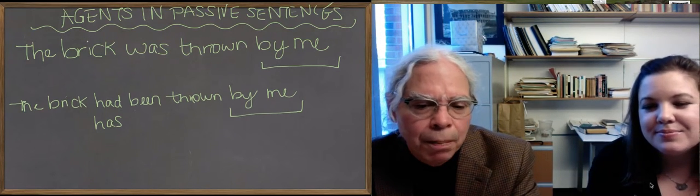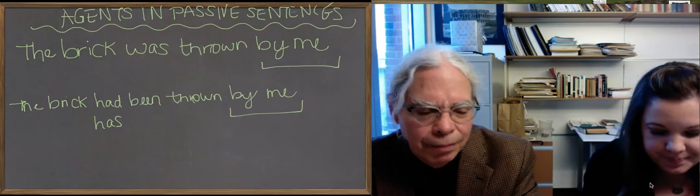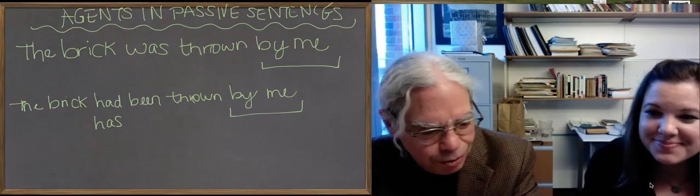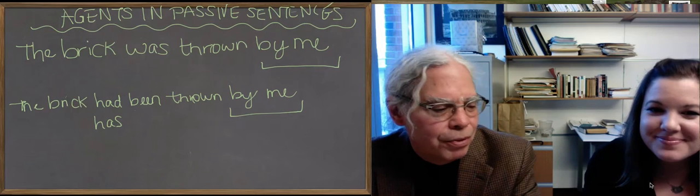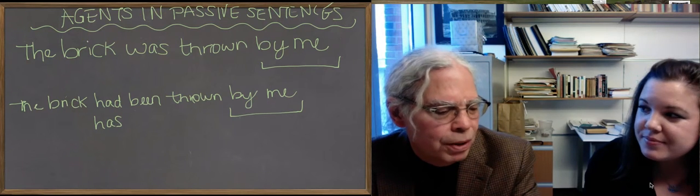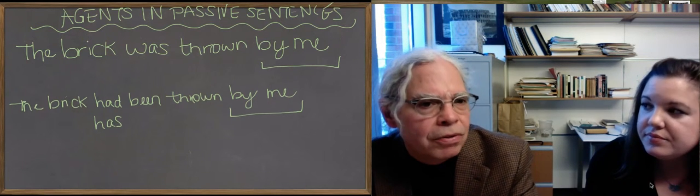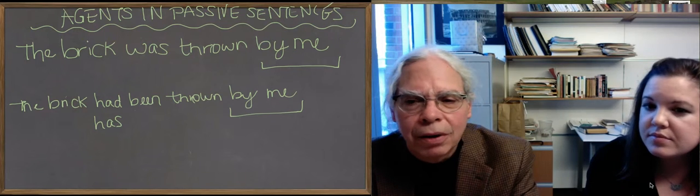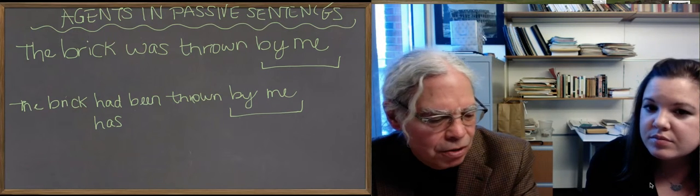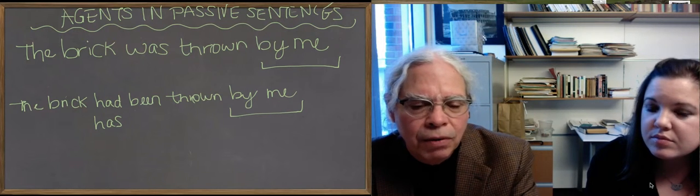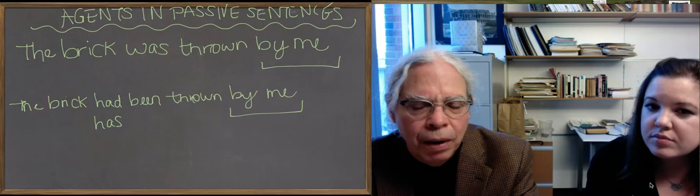But what we're talking about is how you say by me in English. And that's how you do it. You use the word by, the preposition by, and you put the person who would be the subject of the active sentence. I threw the brick becomes an agent, in other words, the object of the preposition by in the expression by me.